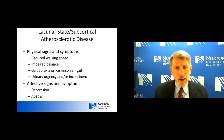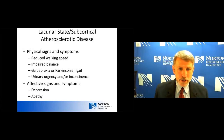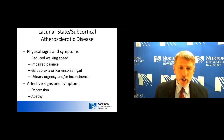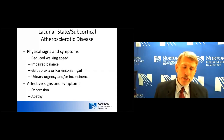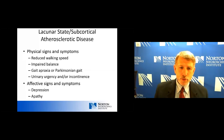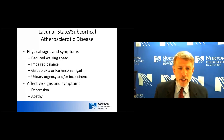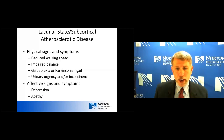Just as we see cognitive changes, we're often going to see some physical changes with vascular dementia. Cognitive speed slows, and so does physical speed — walking speed is slower, balance may be off. We often see changes in gait, sometimes referred to as gait apraxia or Parkinsonian gait, or even lower-half Parkinsonism — almost as if someone has Parkinson's disease from the waist down. We may also see problems with urinary control, and some affective signs and symptoms like depression or apathy.